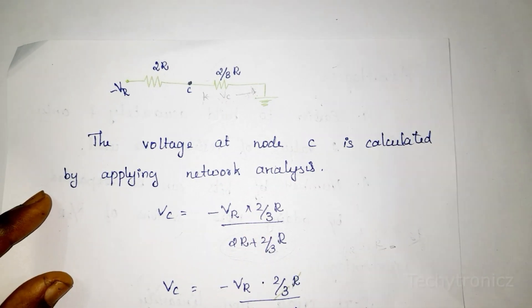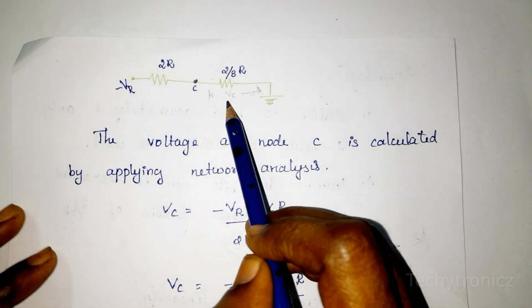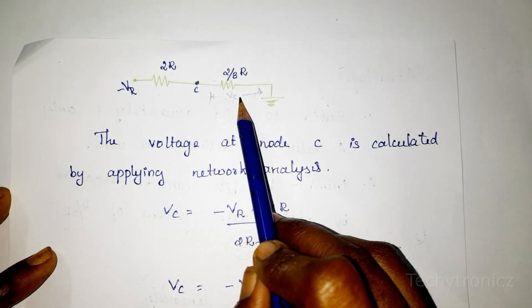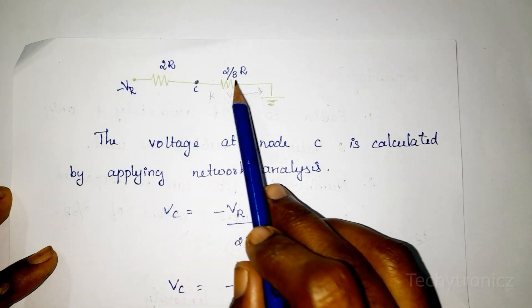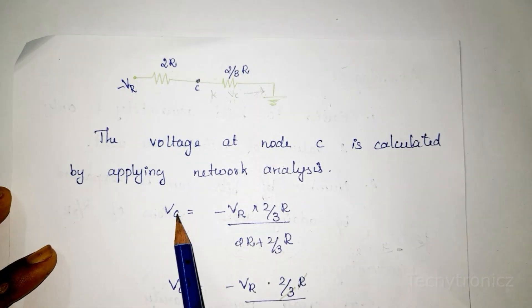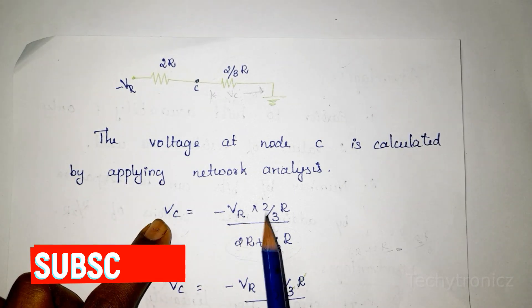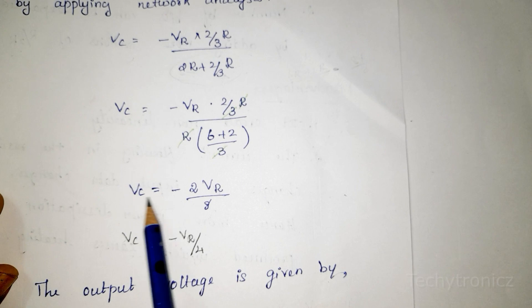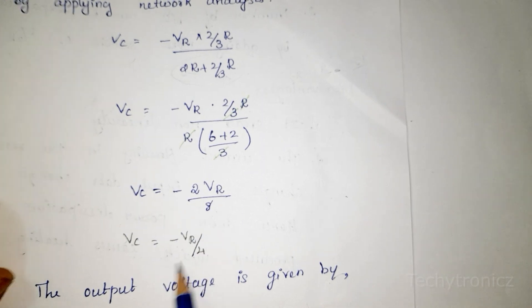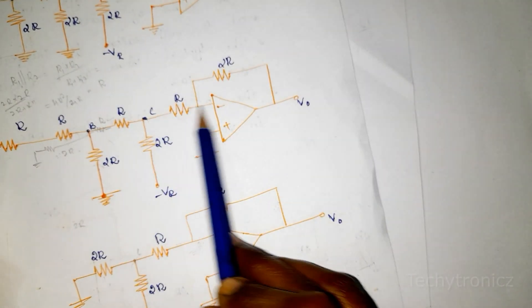We calculate Vc because that voltage is given to the input of the op-amp. Both resistances are in series, so we use the voltage divider rule: total voltage times same resistance divided by total resistance. Vc equals VR into (2R/3) divided by (2R plus 2R/3). Taking LCM and simplifying, we get Vc equal to minus 2R into VR divided by 8. Cancelling 2 and 8 gives Vc equal to minus VR divided by 4. This Vc voltage is given to the input of the op-amp.